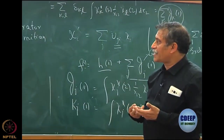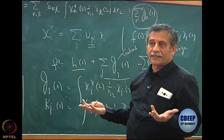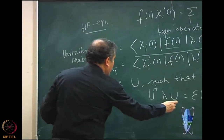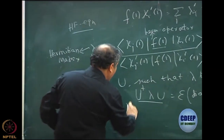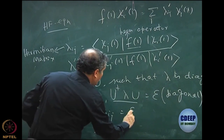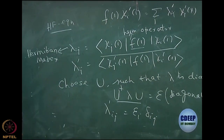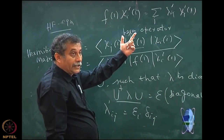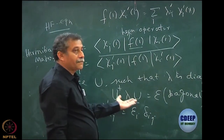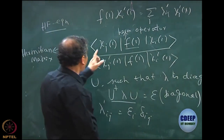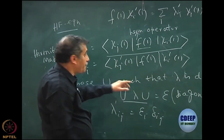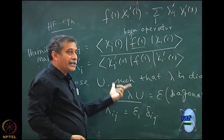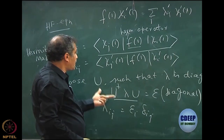Now I am saying: let us choose U such that lambda is diagonal, and then rewrite the Hartree-Fock equation. Lambda' is now diagonal, so lambda'_ij = ε_i δ_ij. That is the meaning of diagonal. The new lambda' in the new basis will become diagonal after the transformation. Note that I am transforming everything to chi, but the lambda transformation must happen in this manner because lambda has one chi on the left and one chi on the right — both must be transformed.